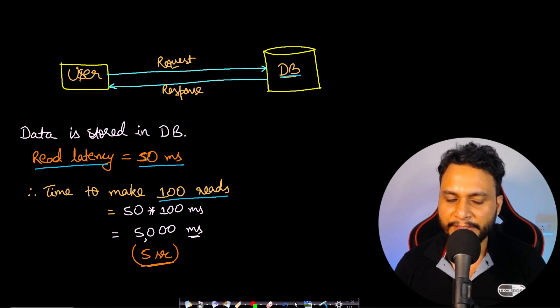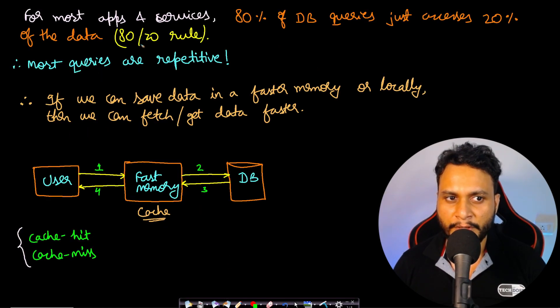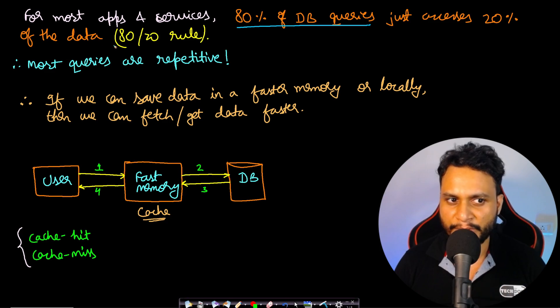Therefore, the time to make 100 reads will be 100 times 50 ms, and that will be 5000 ms, equivalent to 5 seconds. For most of the applications and services, 80% of the DB queries just accesses 20% of the data according to the Pareto principle.